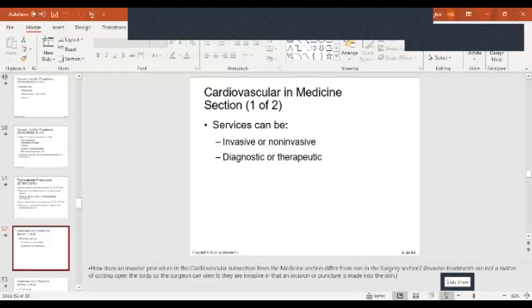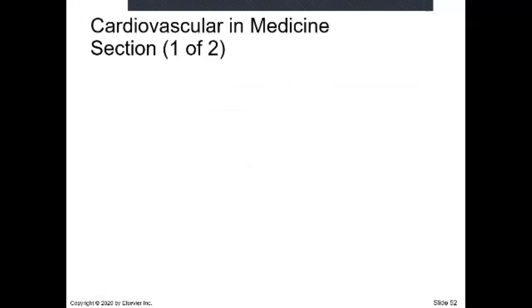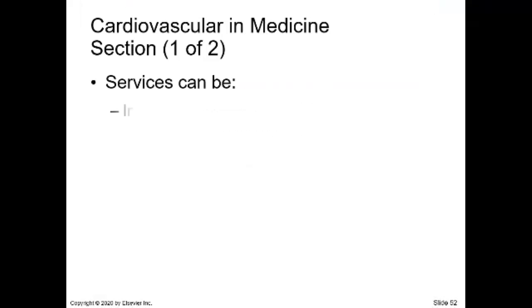Now we're moving into the cardiovascular medicine portion of the CPT. Looking at the 2020 CPT, the code range starts at 92950, which says 'other therapeutic services and procedures,' and above it says cardiovascular. Cardiovascular services in the medicine section can be invasive or non-invasive, and they are either diagnostic or therapeutic.